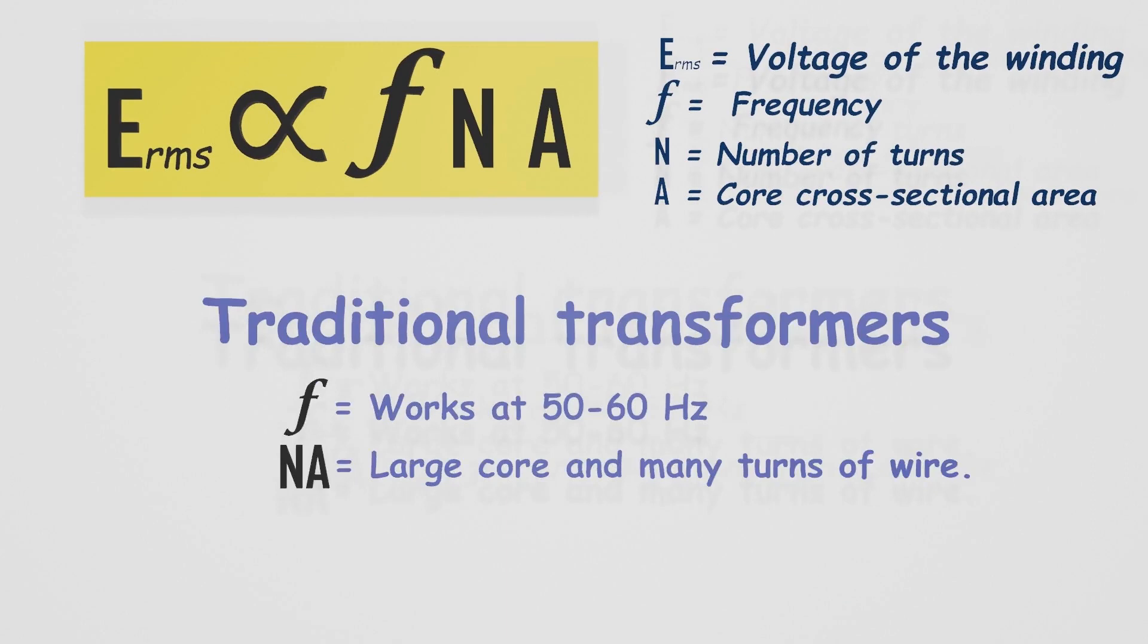Traditional linear transformers operate at the frequency of the mains AC, which is typically 50 to 60 hertz, depending on the region. To achieve maximum power output and efficiency in these transformers, a larger core and a higher number of turns in the windings are required. However, this results in larger and heavier transformers.